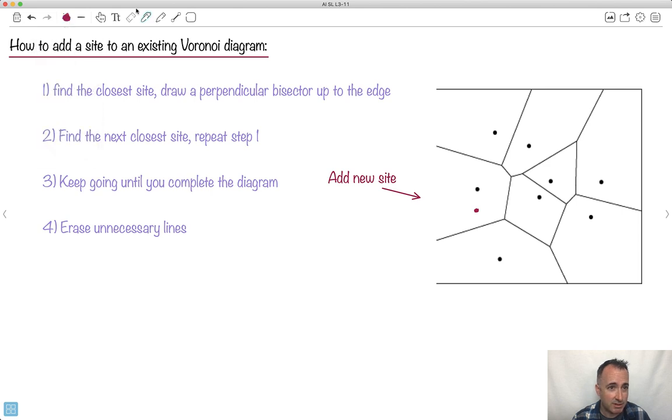So how do you actually do it? I figured I would just give you some instructions and see how it goes here. So this is going to be our goal. Find the closest site and draw a perpendicular bisector up to the edge.